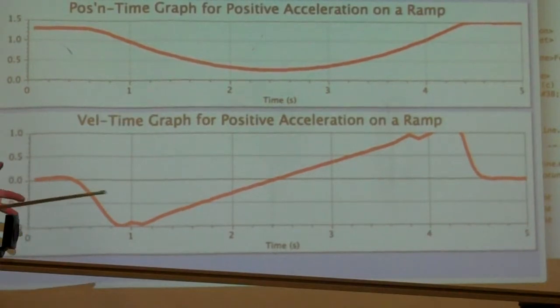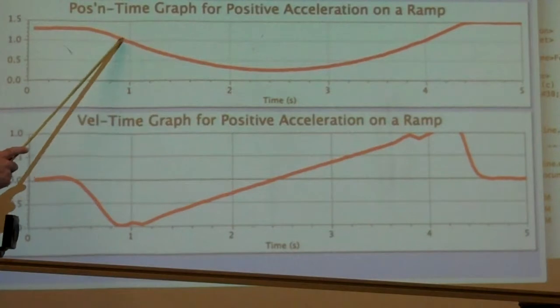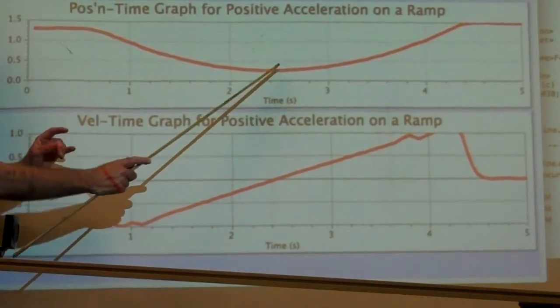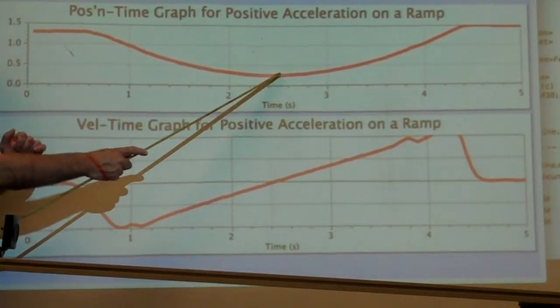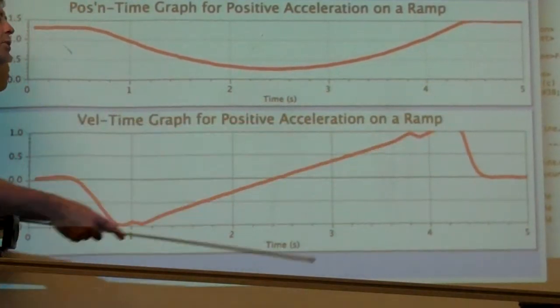The steepness of that line is an indicator that the cart is getting faster. So slowing down along here as the line approaches zero slope at the very highest point on the ramp, closest to the detector here, and then speeding up as it moves back down the ramp to the right.